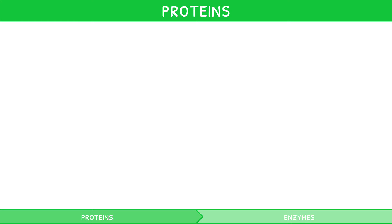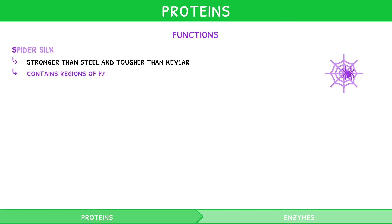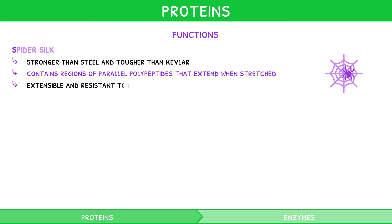There are six main functions that proteins can carry out. This can be remembered with the mnemonic SIR-RIC, where S stands for spider silk, a fibrous protein stronger than steel and tougher than Kevlar. It contains regions of parallel polypeptides that extend when stretched, making it extensible and resistant to breaking.